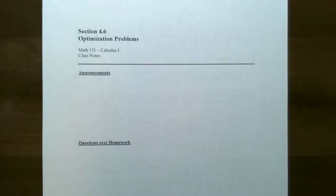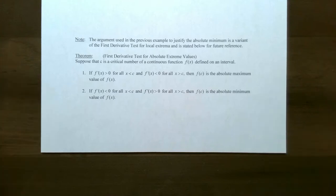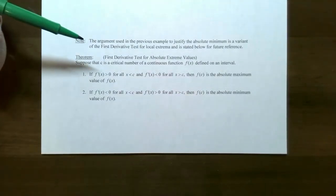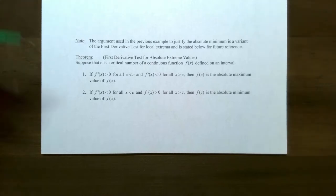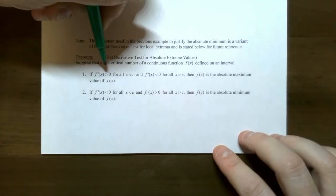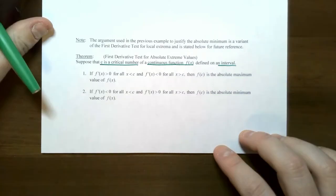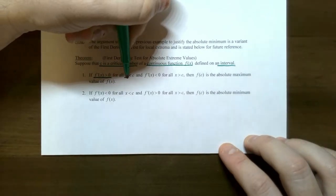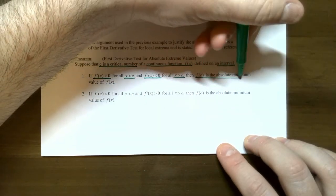Hey everyone, it's Professor Pemberton. In this second part of the video we're going to finish up our discussion on optimization problems. We left off at a note and theorem: the argument used in the previous three examples could have also stated that the local minimum and local maximum were actually absolute minimum and absolute maximum. This theorem is a slight variant of the first derivative test for local extrema, but stated for absolute extreme values. The theorem says: let c be a critical number and the function f(x) is continuous on some interval. If the first derivative is positive when x is less than c, and the first derivative is less than zero when x is greater than c, then f(c) is an absolute maximum.